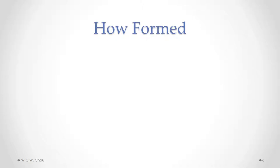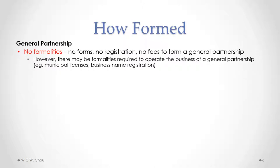Once we have two or more persons carrying on a business together with a view to profit, those requirements being met, we automatically have a general partnership. There's no need to satisfy any other formalities like filling out forms, registering anything, or paying any fees. However, there may be some formalities required to actually operate the business, which could include getting municipal business licenses and registering the business name.